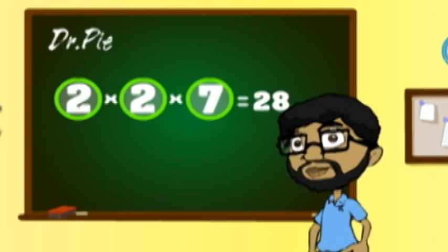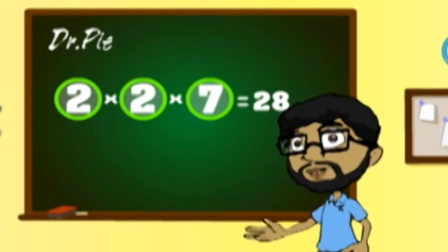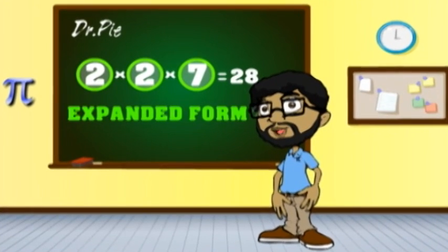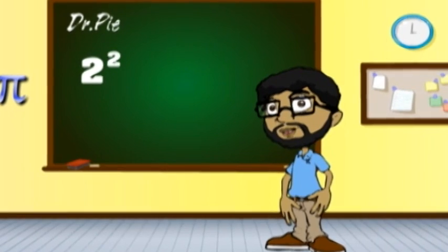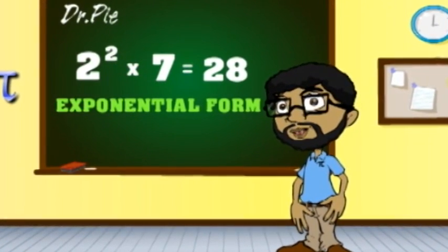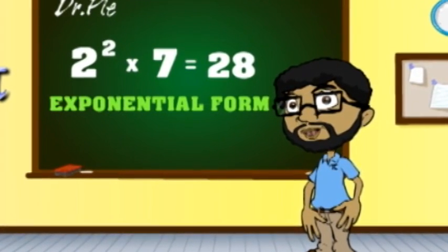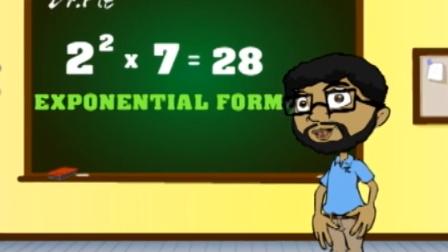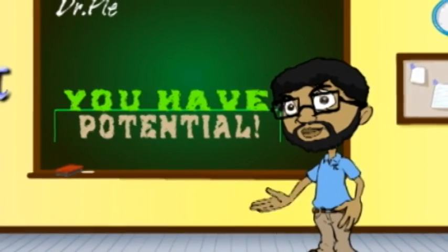If you got that then you're doing great. This is called expanded form — get this right and toot your horn. 2 squared times 7 is called exponential. You would do it great cause you have potential.